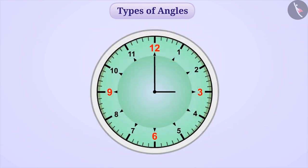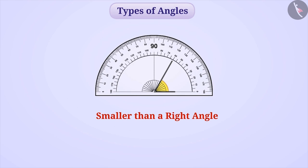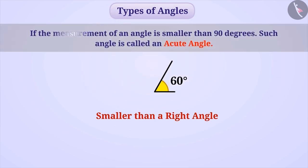Now consider we move the clock hands from 12 and bring it to 1. So now, one hand is on 3 and the other is on 1. Think whether the angle formed between both hands will be a right angle? Absolutely correct. This angle is smaller than a right angle. If the measurement of an angle is smaller than 90 degrees, such an angle is called an acute angle.